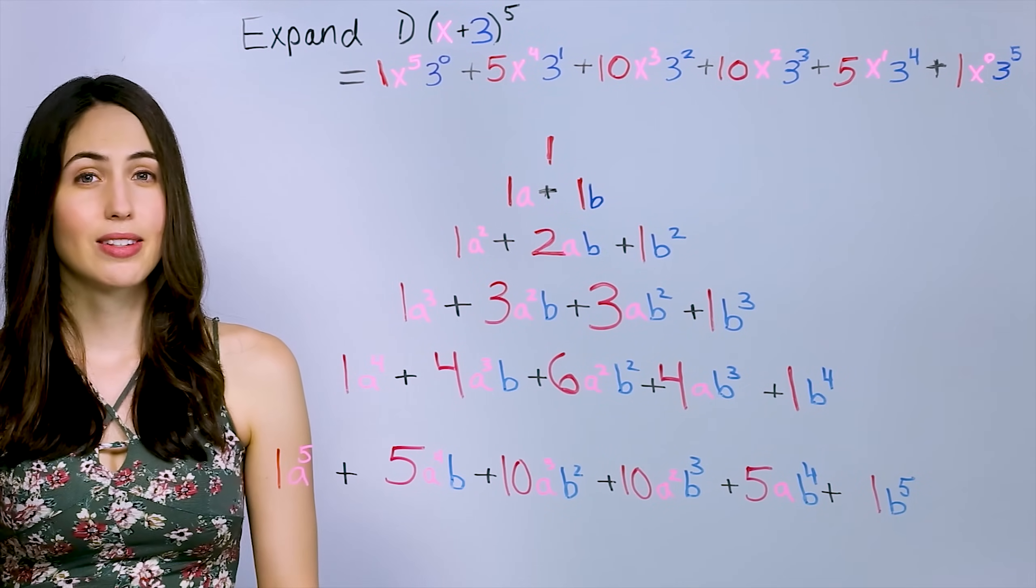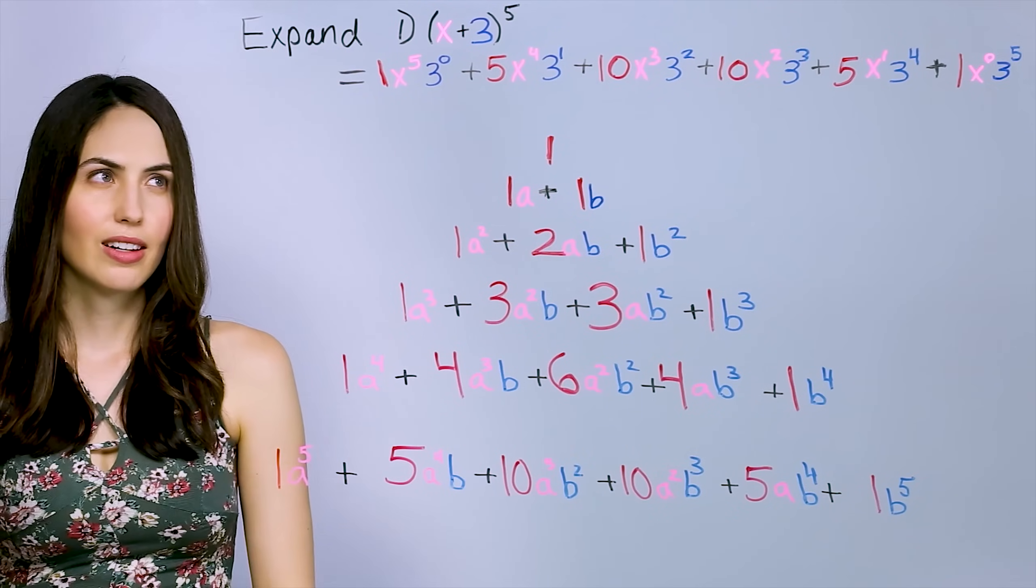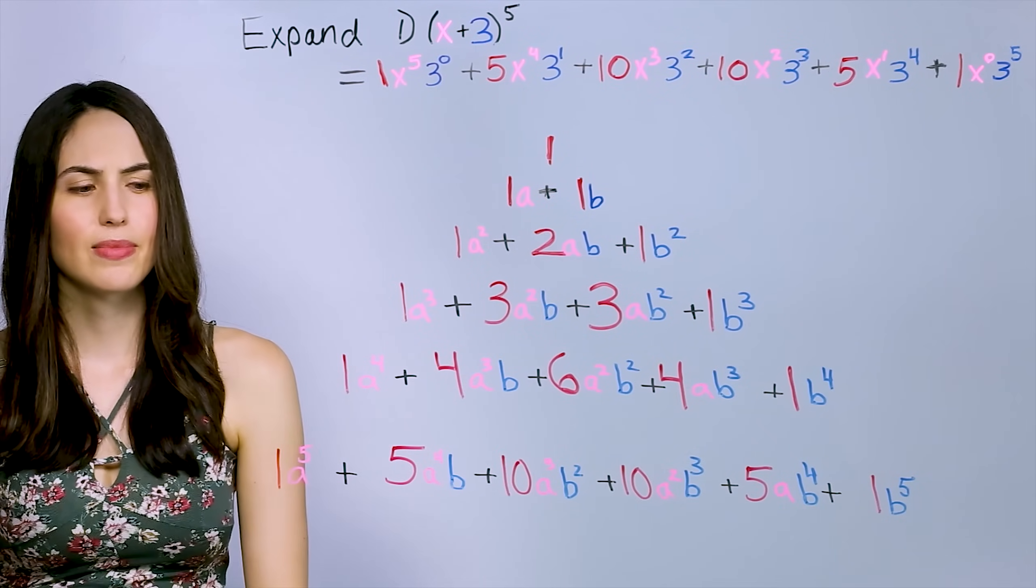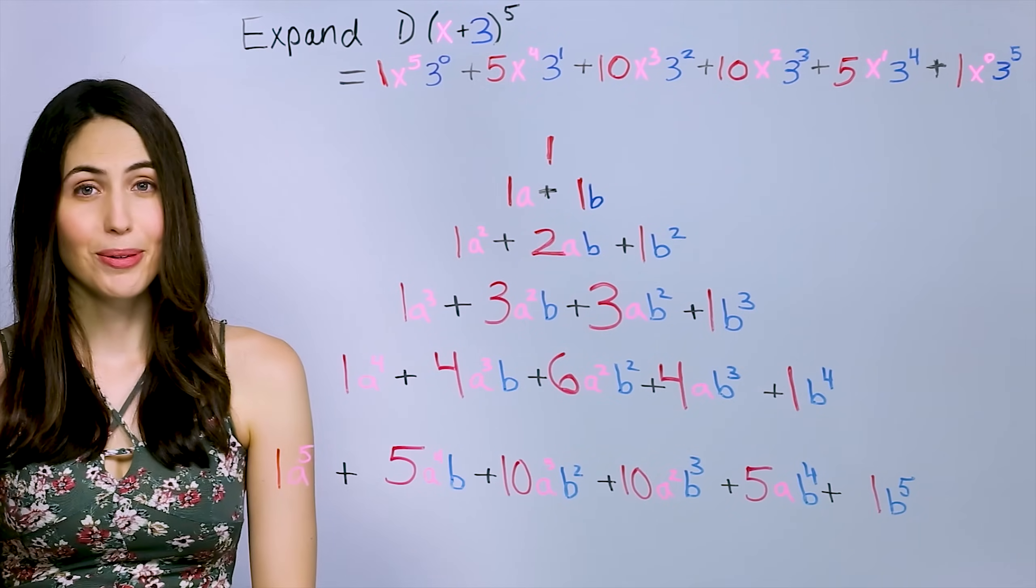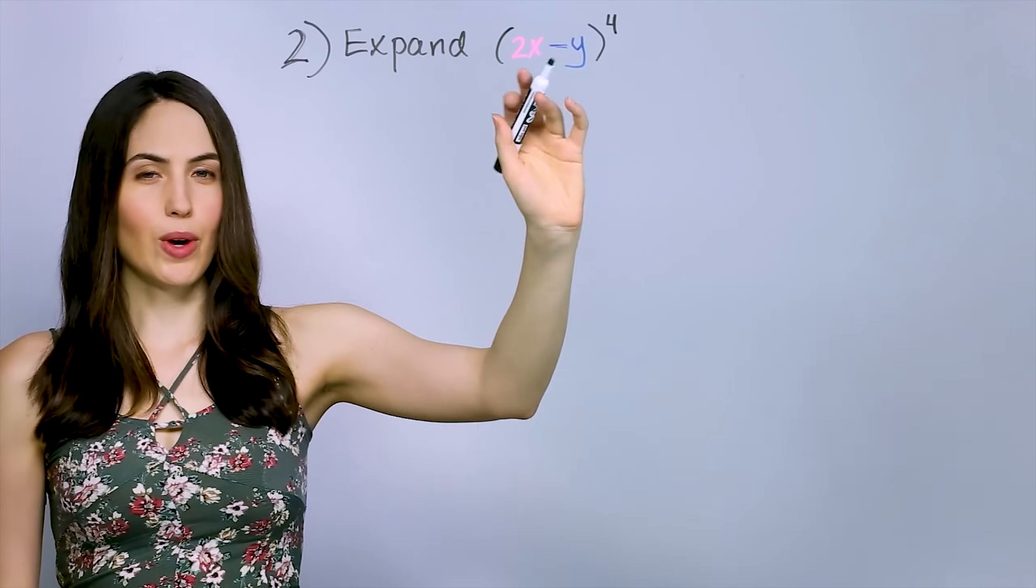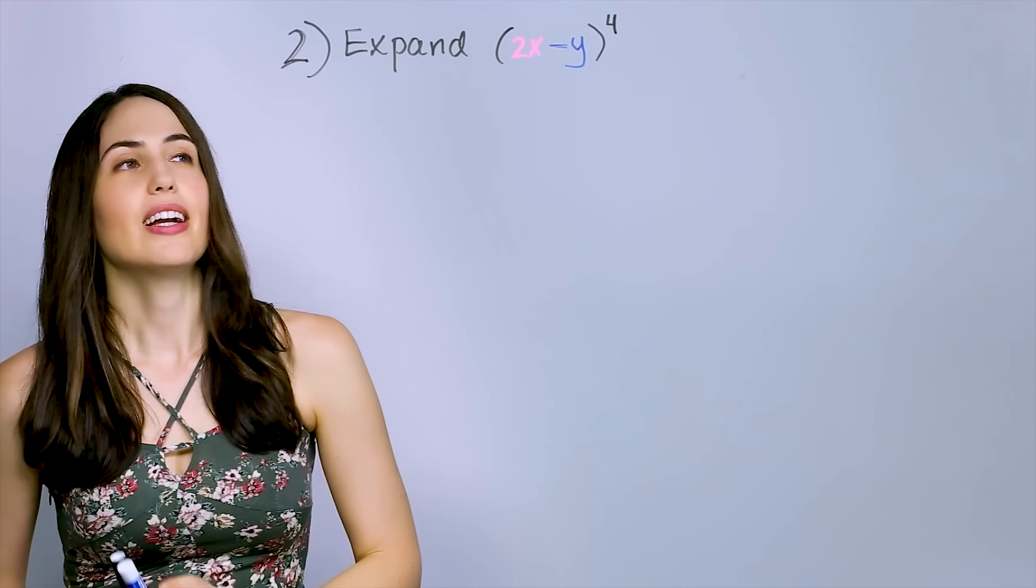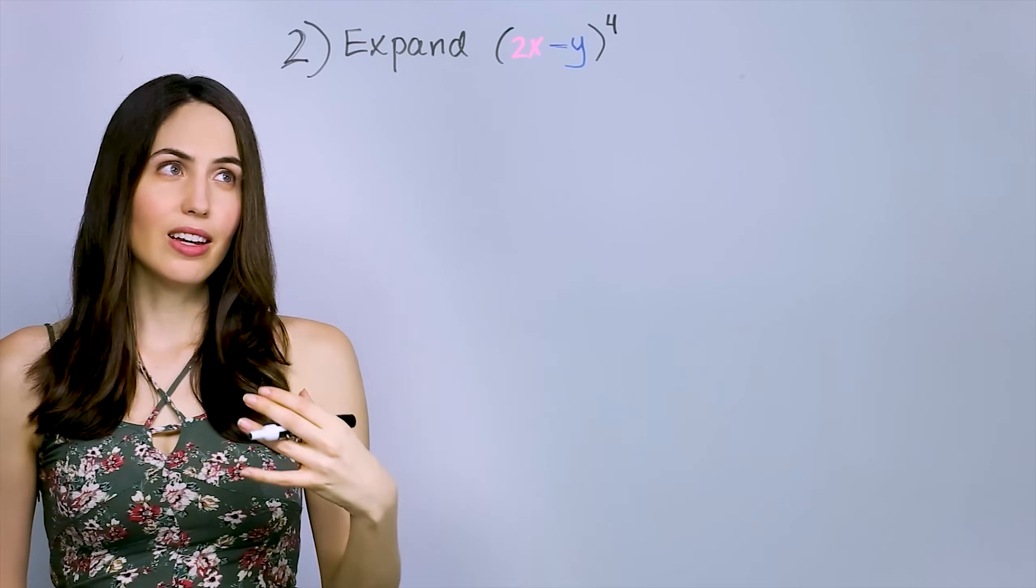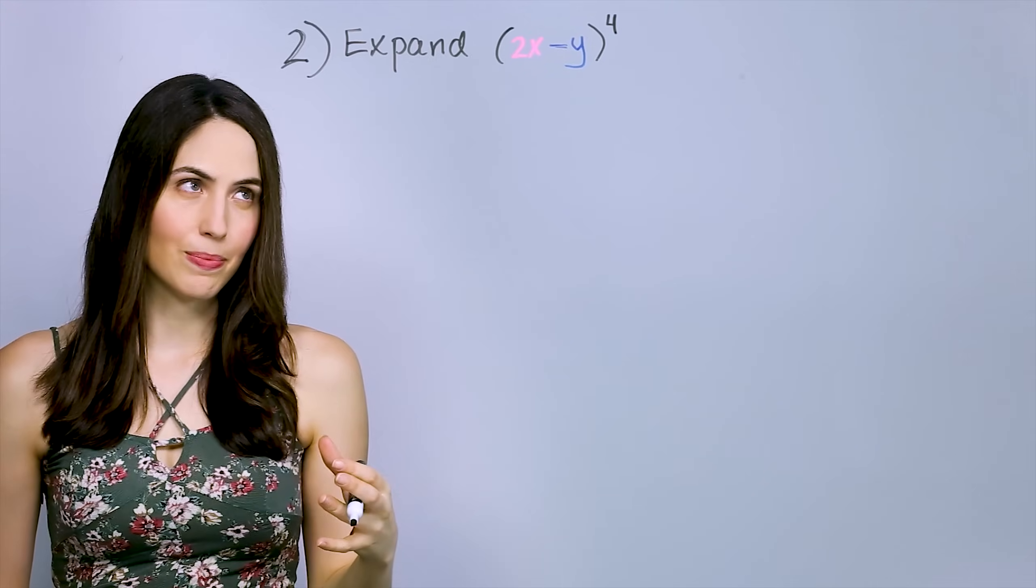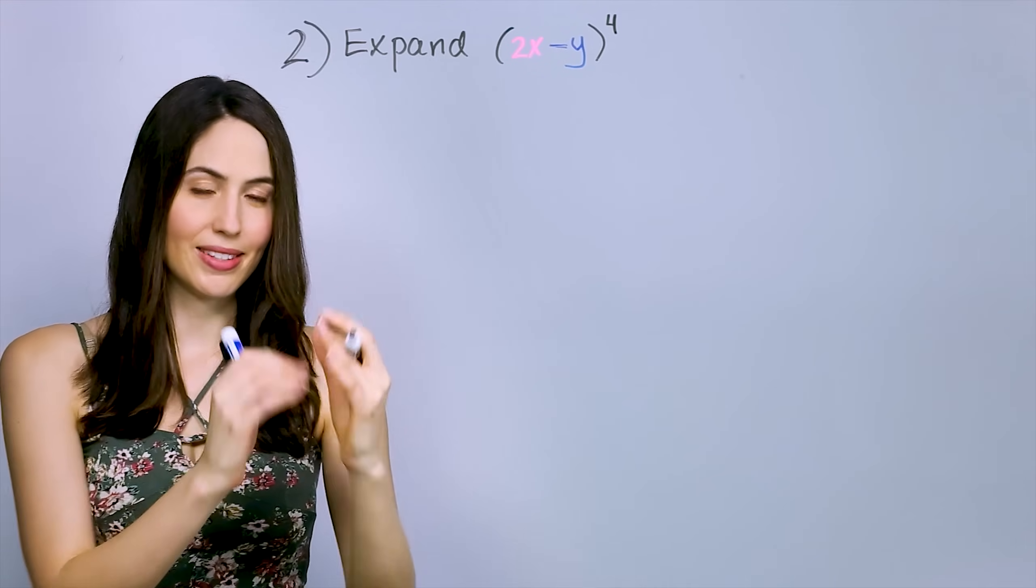Now, how do you do an expansion if you have subtraction instead, like a minus b, a difference? How would you do it? And how do you do it if you have a number on the coefficient, like 2x instead of x? What then? It's basically the same idea. Let me show you. Okay, so we have 2x minus y raised to the 4th power, a difference kind. It's going to be the same idea as before. It's just that for the subtracted part, minus y, think of it as a negative y being added, like plus negative y. And then all of negative y will get raised to a power.